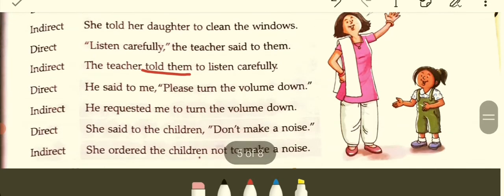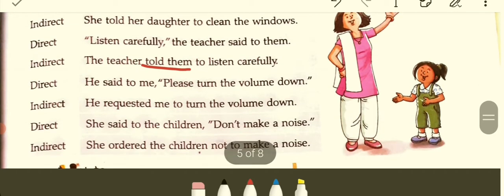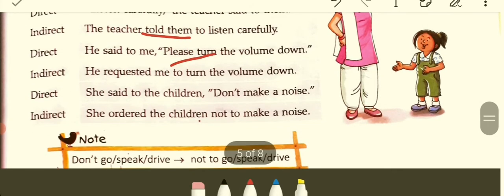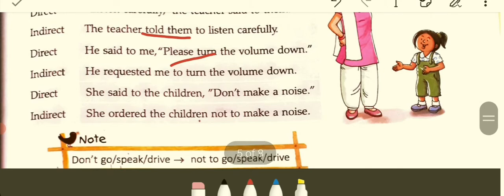He said to me, 'Please help me.' Indirect: He requested me to help him — using 'requested' because the word 'please' is present. Direct: She said to the children, 'Don't make a noise.' This is a command. Indirect: She commanded or ordered the children not to make a noise.